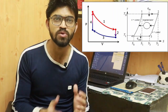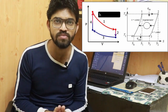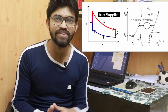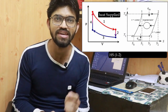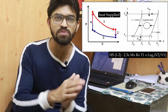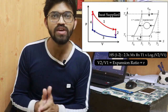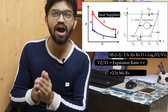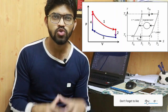Now let's move to the calculations. The first process is isothermal expansion, during which heat is added to the system. The heat addition during process one to two is calculated using the formula: Q₁₂ = 2.3mR·T₁·log(r), where r = V₂/V₁ is the expansion ratio.